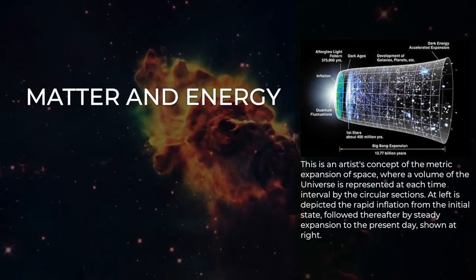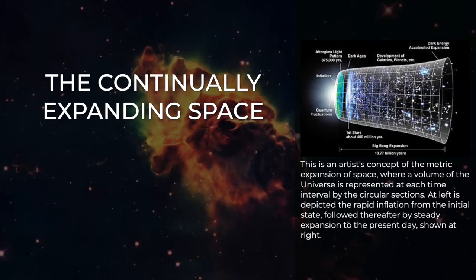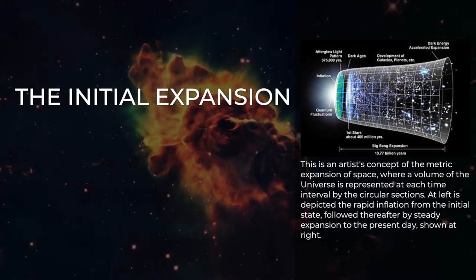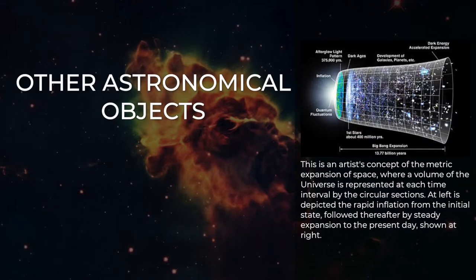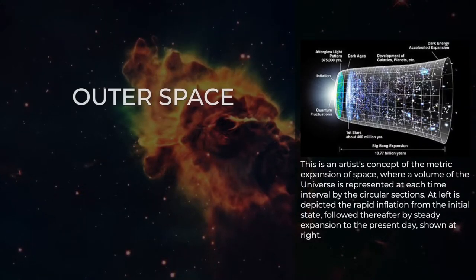When this happened, matter and energy became decoupled, allowing photons to travel freely through the continually expanding space. Matter that remained following the initial expansion has since undergone gravitational collapse to create stars, galaxies and other astronomical objects, leaving behind a deep vacuum that forms what is now called outer space.